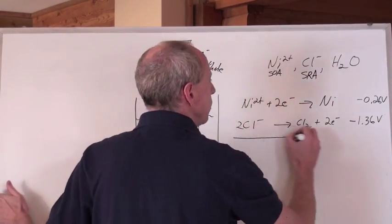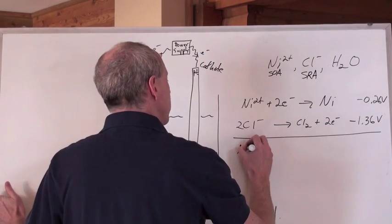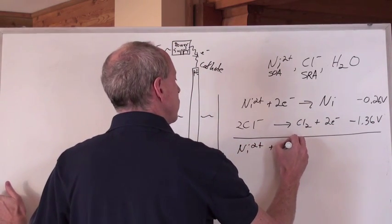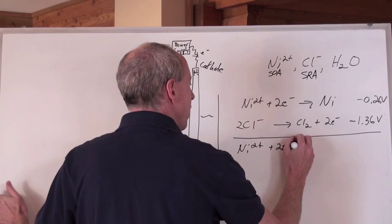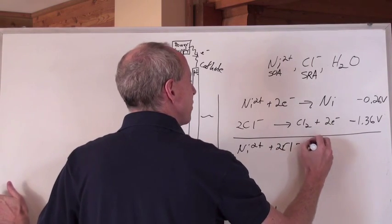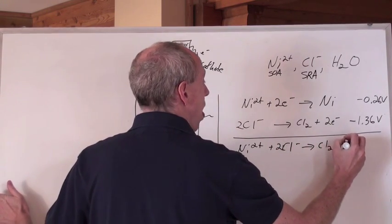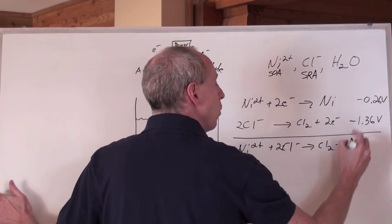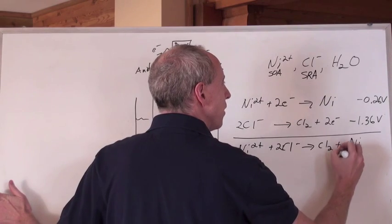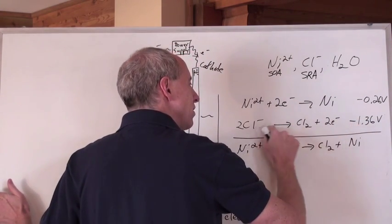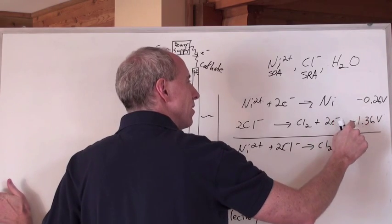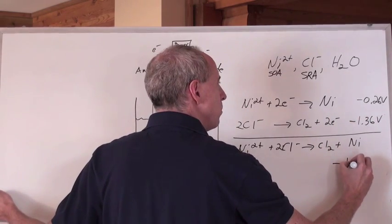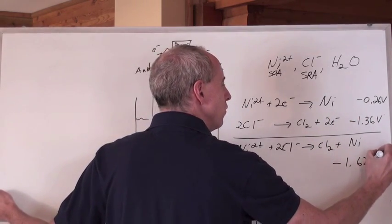And now when you add those two reactions together, you're going to get nickel ions plus two chloride ions, and that's going to make Cl2 gas, greenish yellow poison, and nickel. But what's the E naught when you add those together? Well, you reverse this one, because it's the SRA, and add it to this one, and you're going to get negative 1.62 volts.